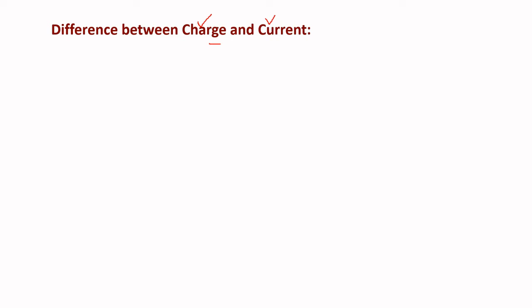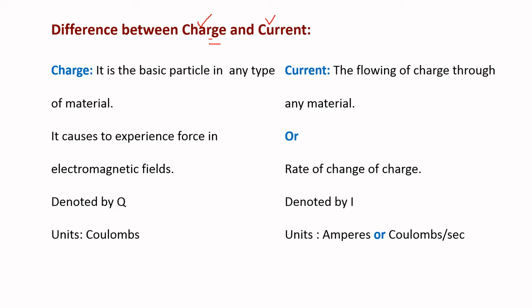Coming to the difference between charge and current. Many consider these two terms as the same, but there is a lot of difference between them. Charge is a basic particle in any type of material and it causes the material to experience force in an electromagnetic field. These charges may be positive, negative, or zero charges.